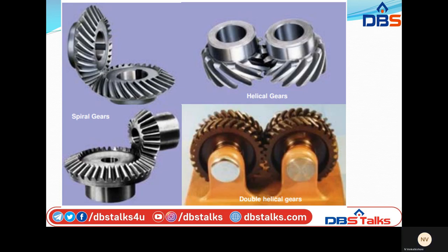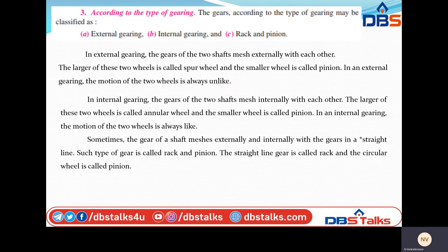Then according to the type of gearing — what is the type of gearing means we have two varieties in most cases. One is external gearing and internal gearing, and there is a third one: rack and pinion. In external gearing, the gears of the two shafts mesh externally with each other — most of the cases we may see like this only. The gears of the two shafts will mesh externally with each other, meaning only the outer periphery of the wheels has the gear teeth.